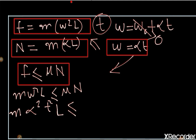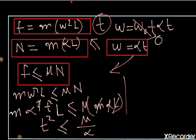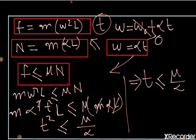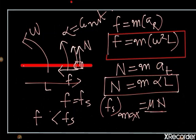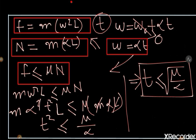So we have: m × alpha² × t² × L ≤ mu × m × alpha × L. The m terms cancel, one alpha cancels, and L also cancels, giving: t² ≤ mu / alpha. Therefore the time t must be less than or equal to the square root of mu divided by alpha. This is the time until which the body is not sliding; after this time, the body will start sliding with respect to the rod. This is our answer.